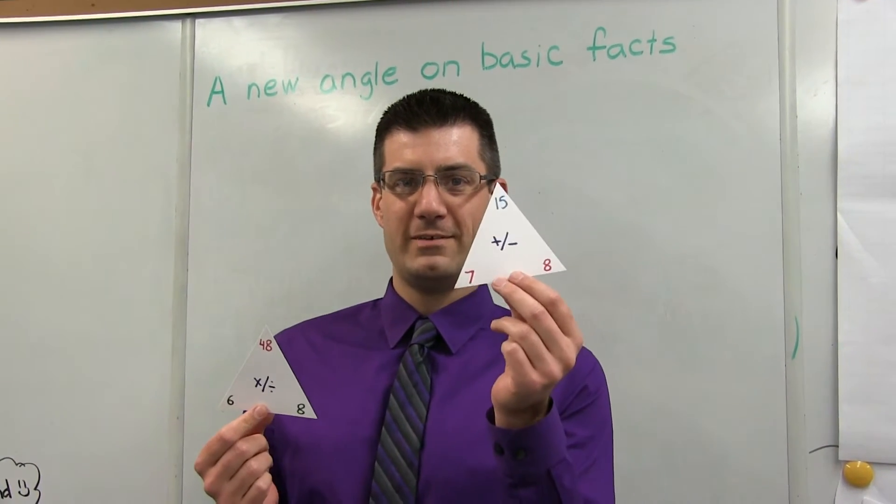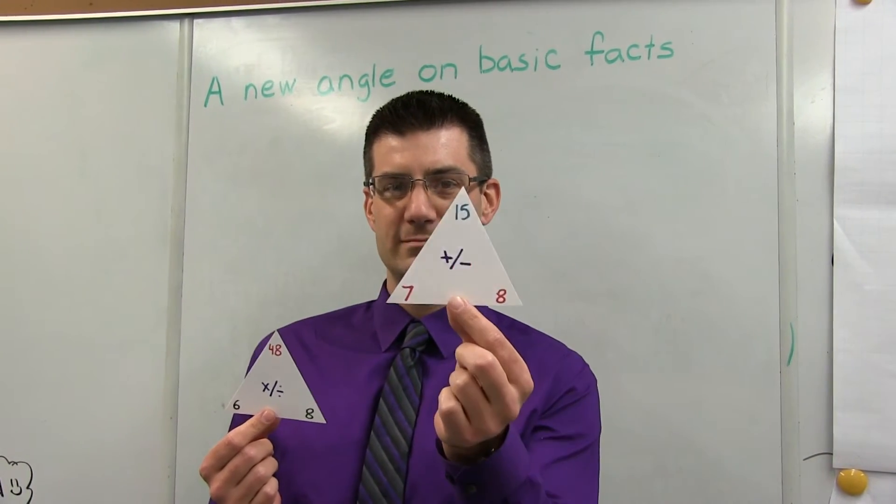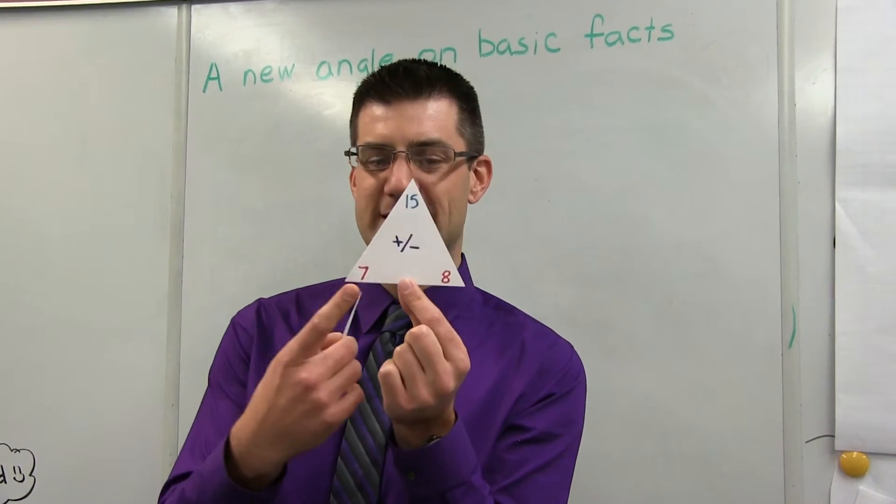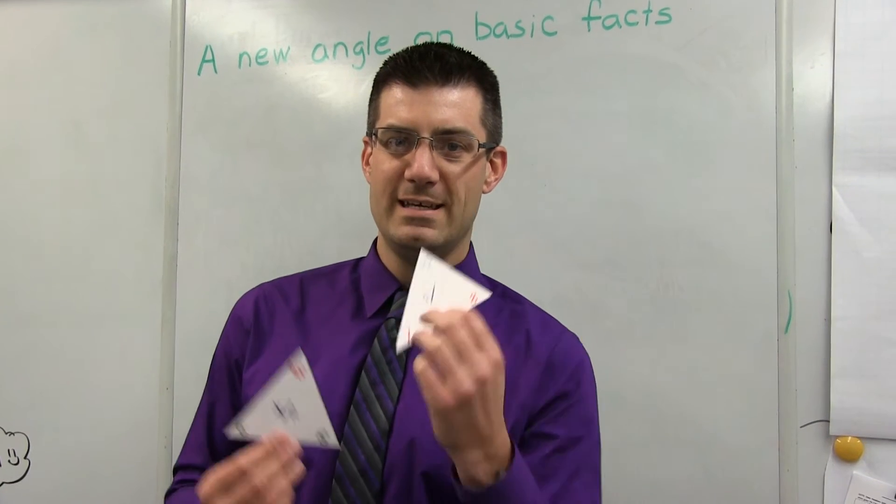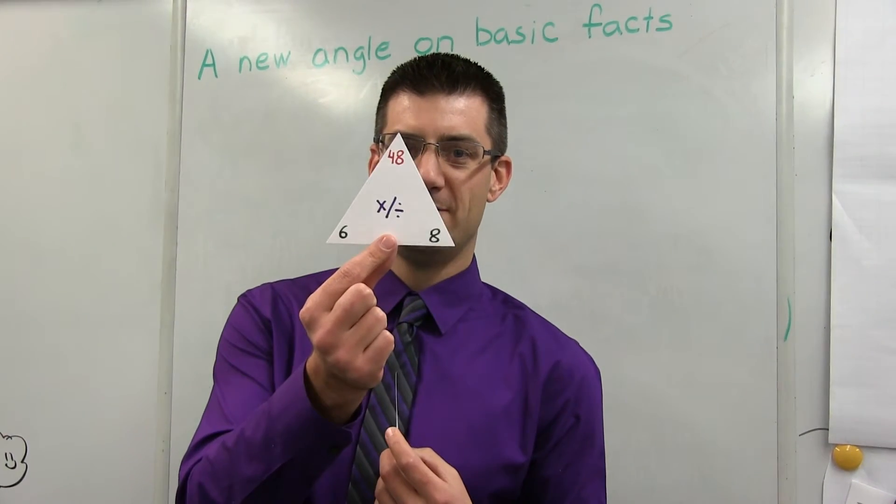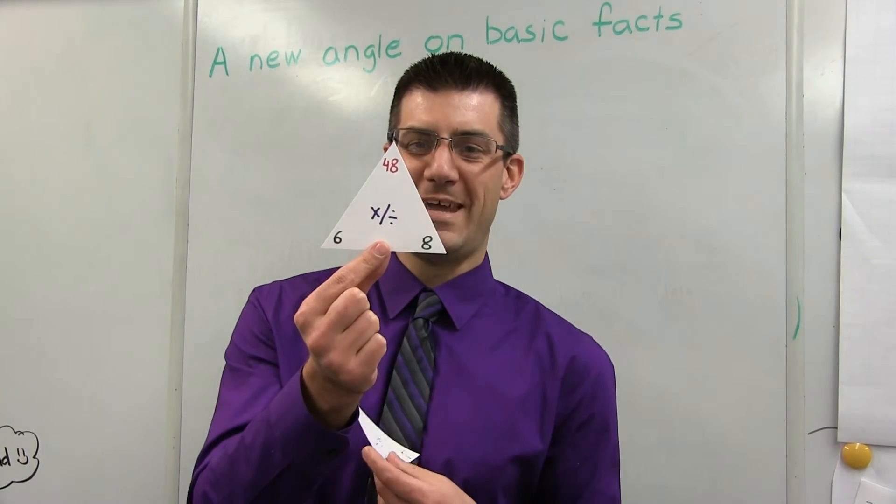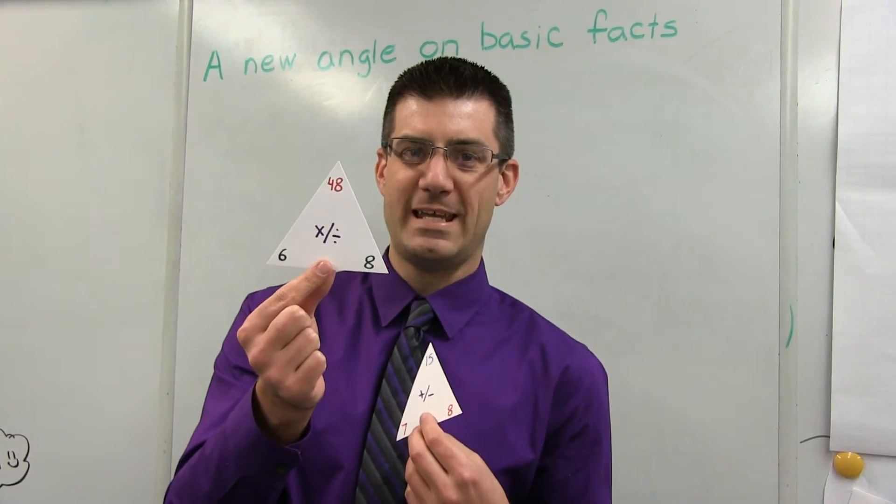So we have an example of an addition subtraction flashcard. Here we could see using addition, we have 7 plus 8 would give us a sum of 15. And here's a multiplication division flashcard. Six groups of 8 equals 48, or 6 times 8 equals 48.